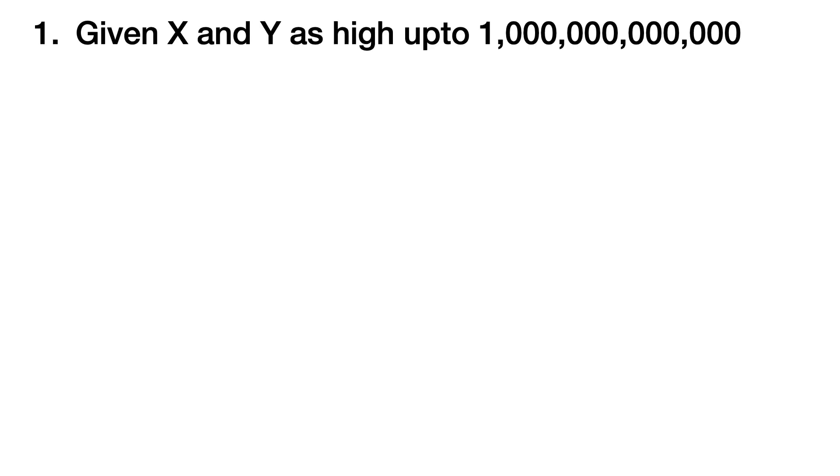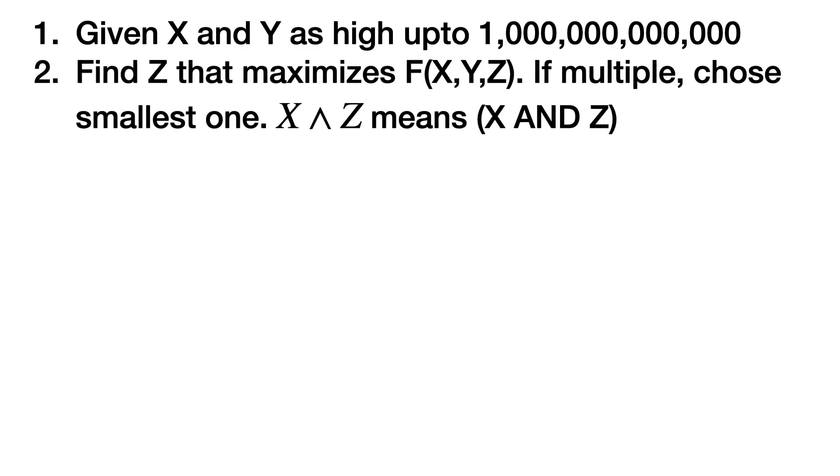What makes this problem so difficult? You are given two integers X and Y which can be as high as a trillion, which is 10 to the power 12. You have to find Z that maximizes F(X,Y,Z). If there are multiple values for Z, you have to choose the smallest one. F(X,Y,Z) is nothing but the product of X and Y, but before doing the product we perform an AND operation with both X and Y with Z.